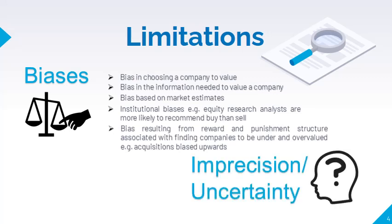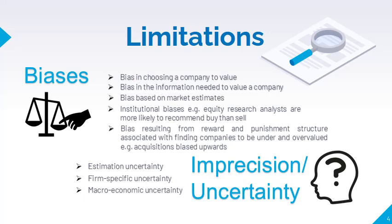Imprecision and uncertainty also abound the valuation process. Estimation errors may occur in processing raw data into information and in assessing and plugging inputs into valuation models. A firm's performance as reflected in its earnings and cash flows can also be very volatile and difficult to predict. Uncertain macroeconomic factors also affect valuation. The contribution of each type of uncertainty to a company's overall uncertainty may vary across companies. Macroeconomic factors may be the main source of uncertainty for mature companies, while estimation and firm-specific uncertainty may be highest for start-ups and tech companies. Note that out of the three types of uncertainty, only estimation uncertainty can be clearly laid at the feet of the analyst.